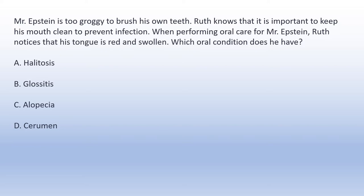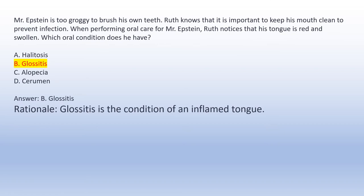Mr. Epstein is too groggy to brush his own teeth. The nurse knows it is important to keep his mouth clean to prevent infection. When performing oral care, the nurse notices that his tongue is red and swollen. Which oral condition does he have? A. Halitosis. B. Glossitis. C. Alopecia. D. Cerumen. Answer B: Glossitis. Rationale: Glossitis is the condition of an inflamed tongue.